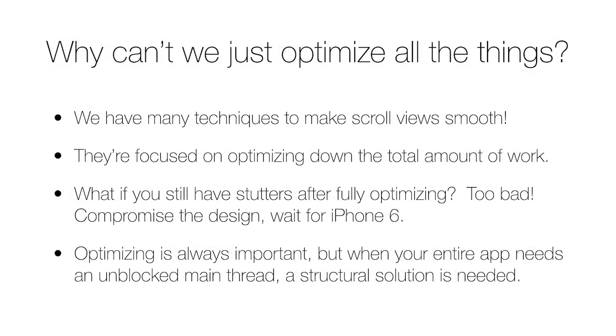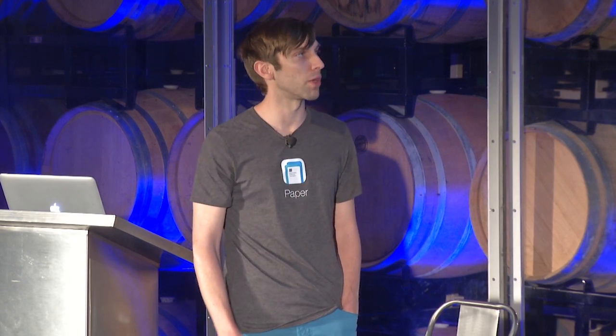Why can't we just optimize all of these things? That's what has been common for optimizing scroll views, and it certainly isn't something you should avoid. But you always get to a point where there are no reasonable or easy optimizations left. At that stage, you're left with basically compromising the design, shipping something slow for users on the oldest phones you want to support, or waiting for new hardware — and none of those are really good options. Especially if it's not just a scroll view that stutters, but your whole interface is sensitive to main thread stalls, you need a much more structural solution.